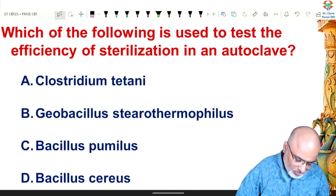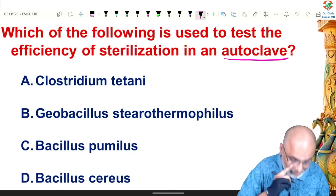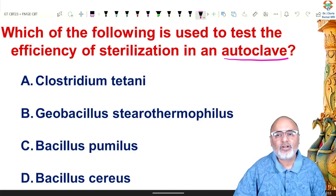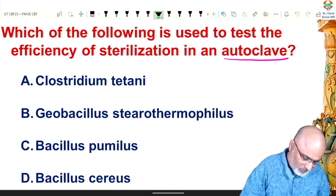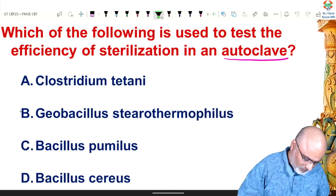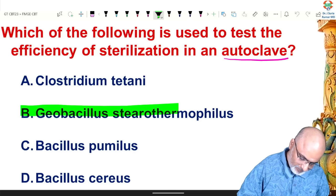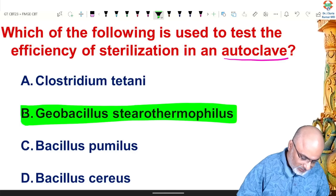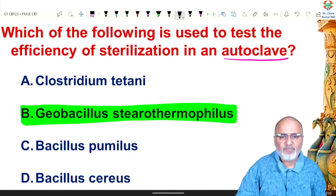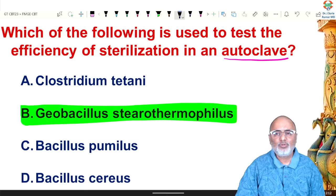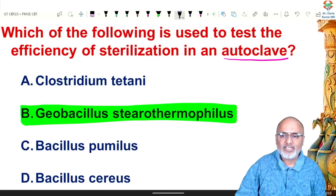For autoclave, the quality control agent is Geobacillus stearothermophilus. The spores of Geobacillus stearothermophilus are used as a quality control agent for autoclave.